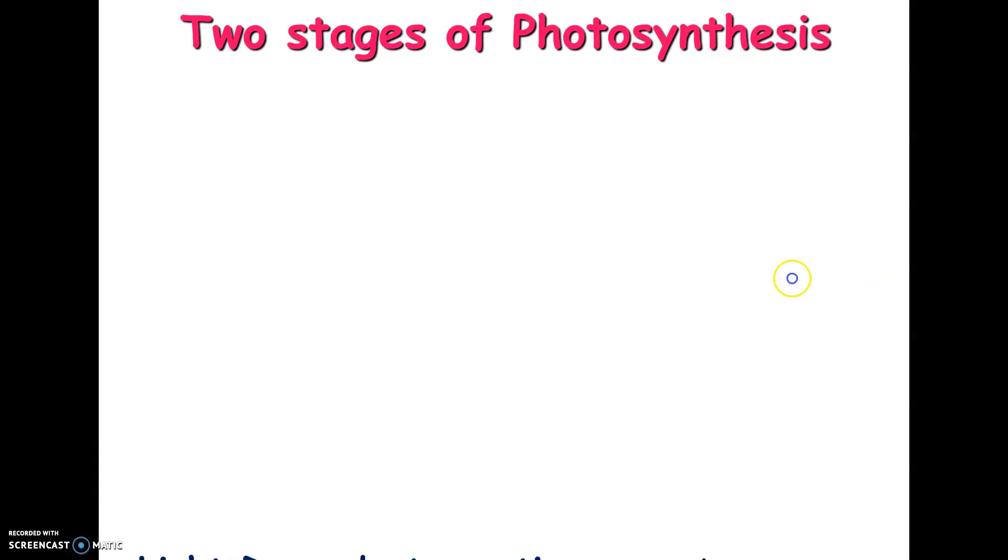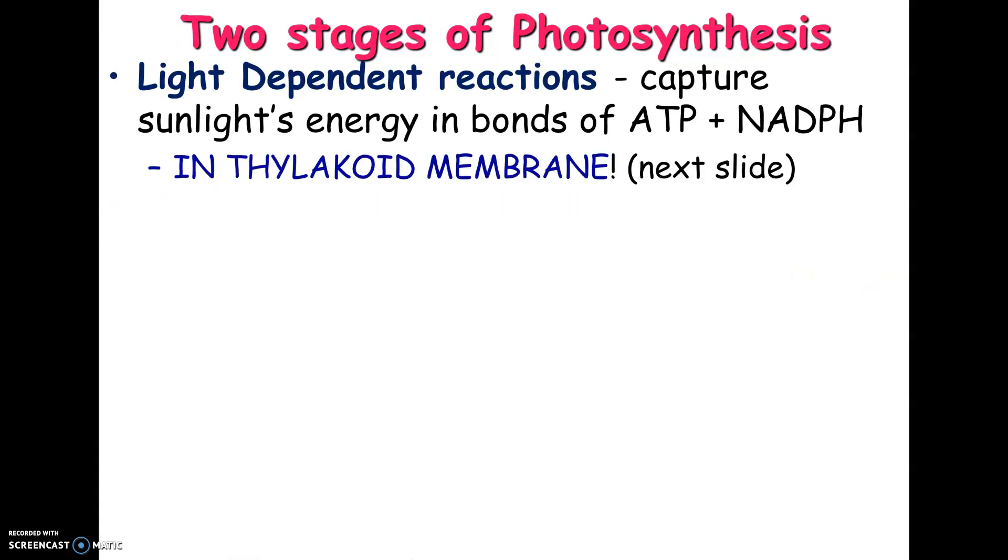All right. So let's get into the details. So the first stage of photosynthesis is called the light-dependent reactions. It used to just be called the light reactions. And this is the part of photosynthesis that's going to actually capture the energy from sunlight. It's going to make two products, ATP from ADP. So ADP is going to become ATP. That's phosphorylation.